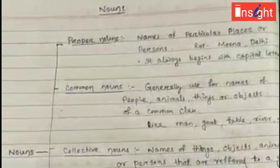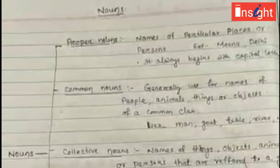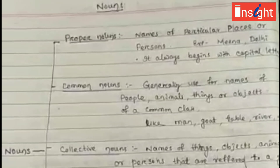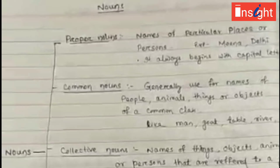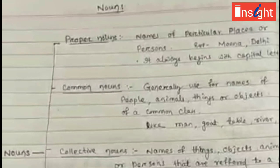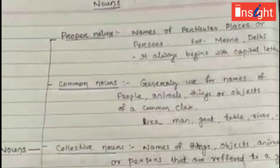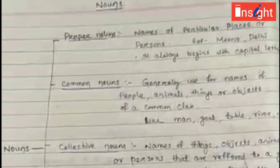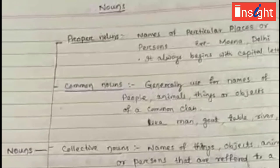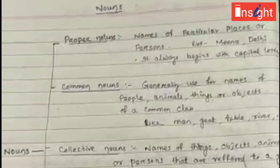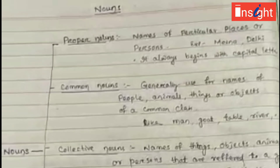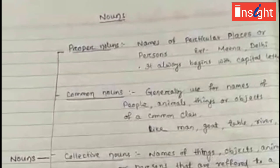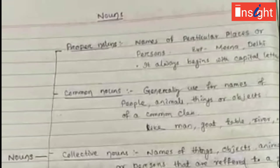Good morning students. Today is the first class for Class 8. We will study the language, and the first chapter is noun. You have already studied about nouns in previous classes. A noun is any word which is used to name a person, place, thing, or animal.